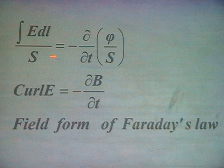Maxwell was very happy — he had seen an equation which relates magnetic field and electric field. On the left-hand side you have electric field; on the right-hand side you have magnetic field. So he made a statement: a time-varying magnetic field will produce an electric field.